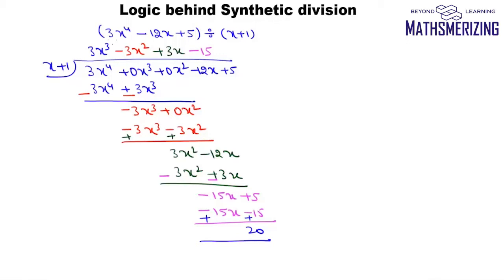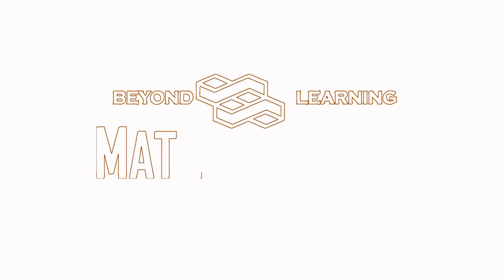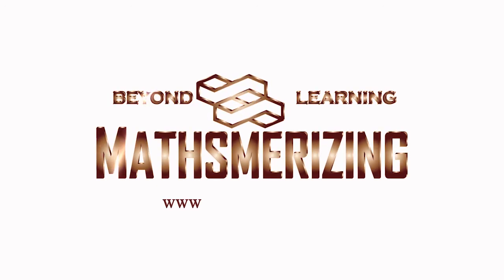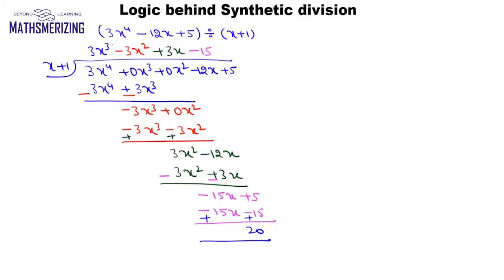In this lecture we will discuss the logic behind synthetic division. I will take up an example: divide 3x to the power 4 minus 12x plus 5 by x plus 1. Using long division, the quotient is 3x³ minus 3x² plus 3x minus 15 and the remainder is 20.